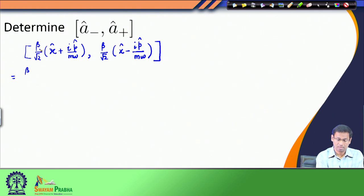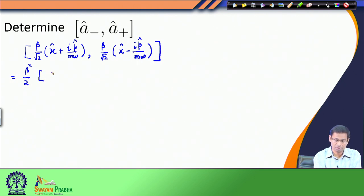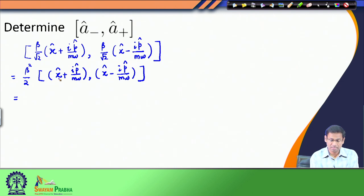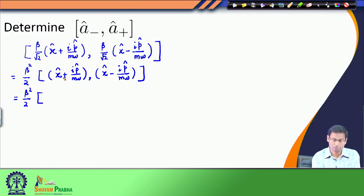This N operator, defined as the product a-plus a-minus, can be shown to be a Hermitian operator. If it is a Hermitian operator, we know that Hermitian operators have special properties: their eigenvalues are real, and their eigenfunctions form a complete set of orthonormal basis. So let us say that if we have an eigenfunction phi-n of this operator N — we do not know what phi-n is — but if phi-n happens to be an eigenfunction with an eigenvalue of n, we can write down this expression: phi-n is an eigenfunction of this operator whose eigenvalue is n.